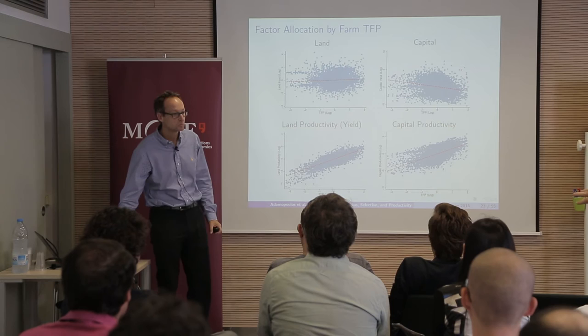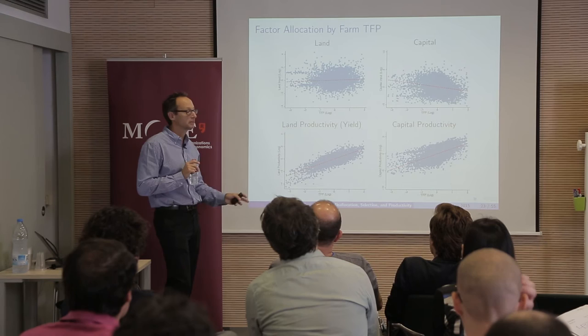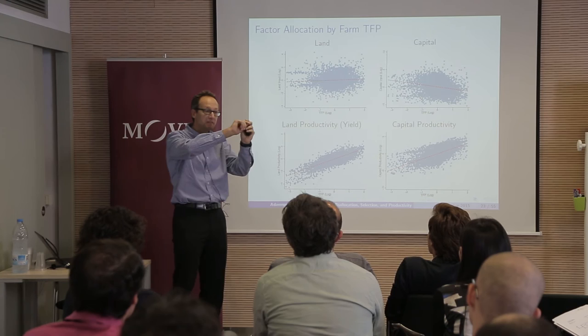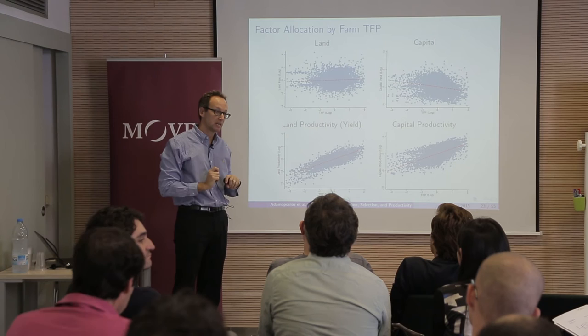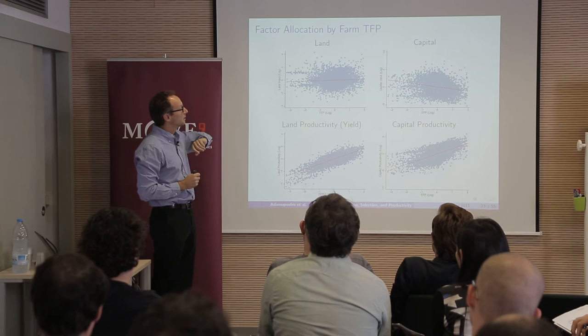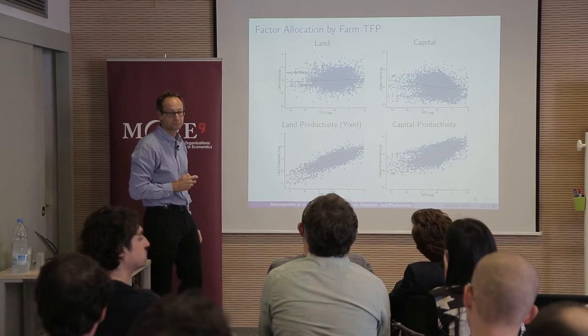In the paper, we exploit the panel dimension to figure out a permanent component of TFP for each farm, and do the misallocation calculation using that — we get very similar results. The numbers go down a little bit, about 85% of the numbers we get for a given year. That's the extent to which we use the panel in the first stage.